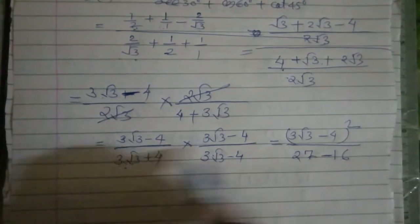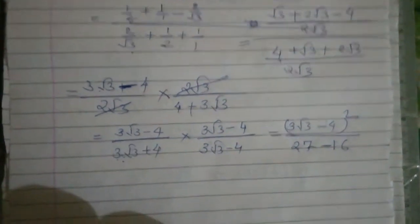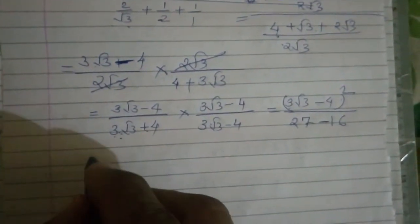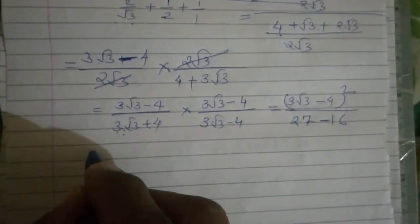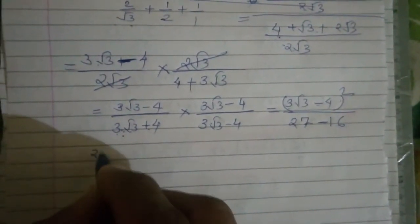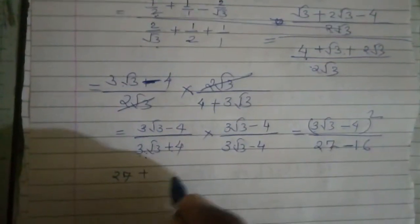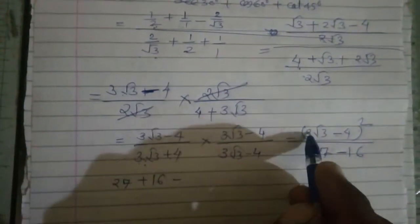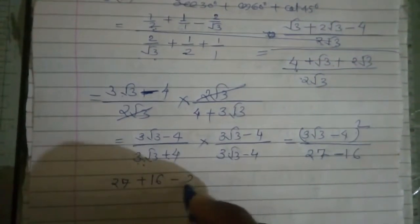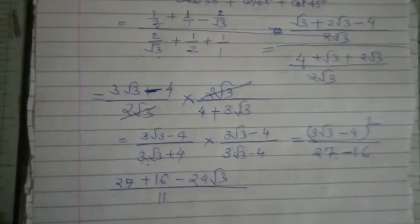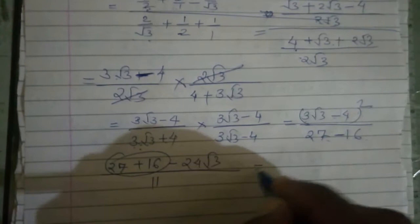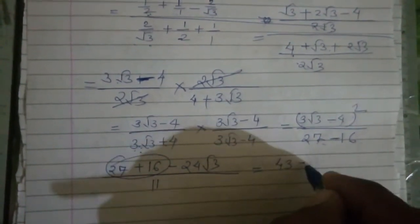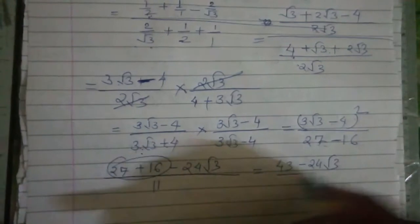A square मतलब 3 root 3 का whole square — 3 का square 9 और root 3 का 3, तो 9×3 = 27. Plus B square — 4 का square होगा 16. 2 into 3 = 6, into 4 = 24 root 3. तो 27 और 16 — 43. Final answer: 43 minus 24 root 3 upon 11.